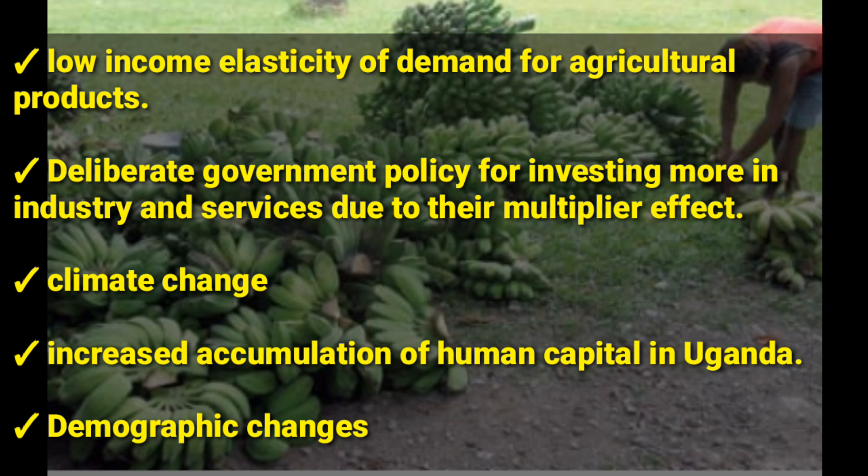Another reason is climate change, which affects agriculture more than industry and service. Agriculture depends on seasons — there is a planting season, weeding season, harvesting season, and selling season. So climate change affects agriculture more than industry and service, and we end up producing less than we would have produced.